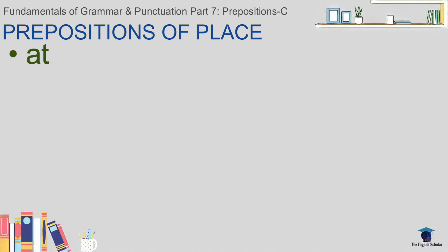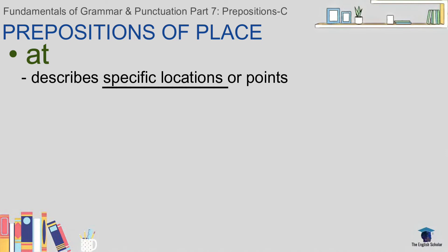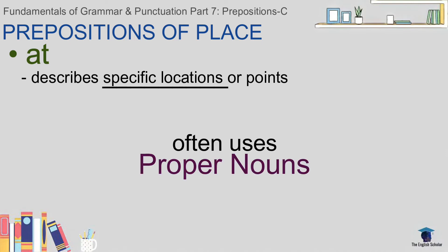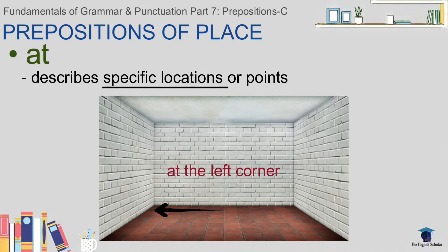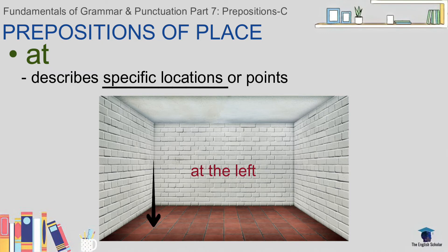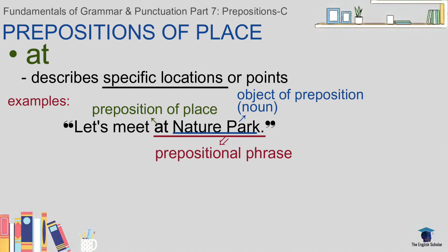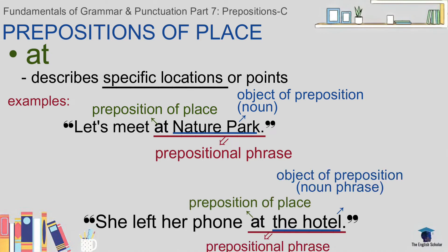Next: 'at.' 'At' describes specific locations or points. This often involves proper nouns — often, meaning not always. There are times we only talk about a specific corner of the room or area of a space, like center or sides. For example: 'Let's meet at Nature Park.' The nature park here is a proper noun because the first letters of the words 'Nature' and 'Park' are capitalized. It is a specific park, and we give it the name 'Nature Park' to identify which one.